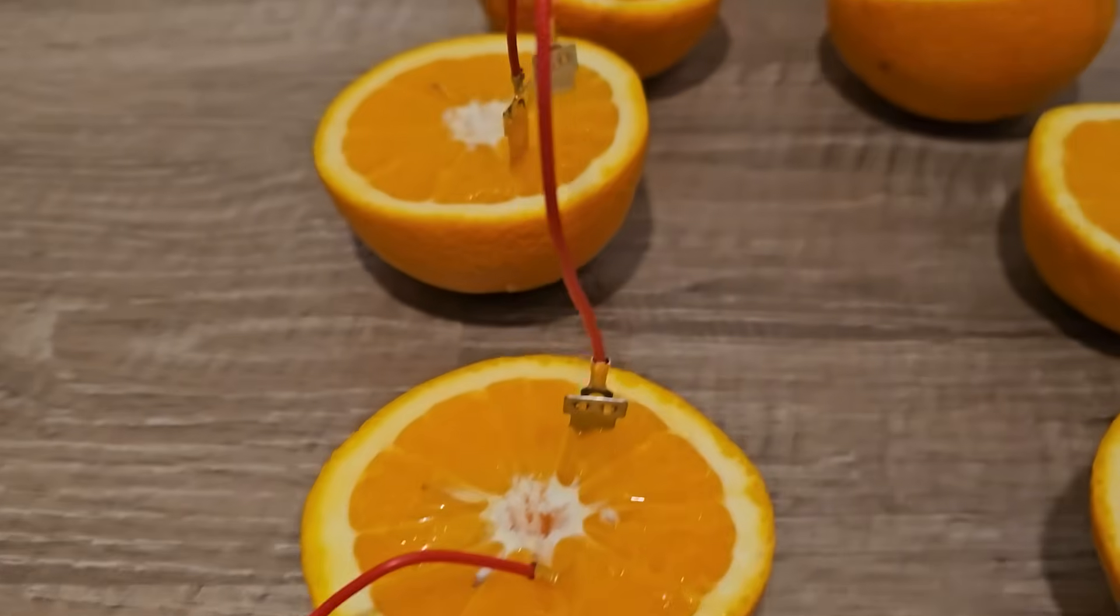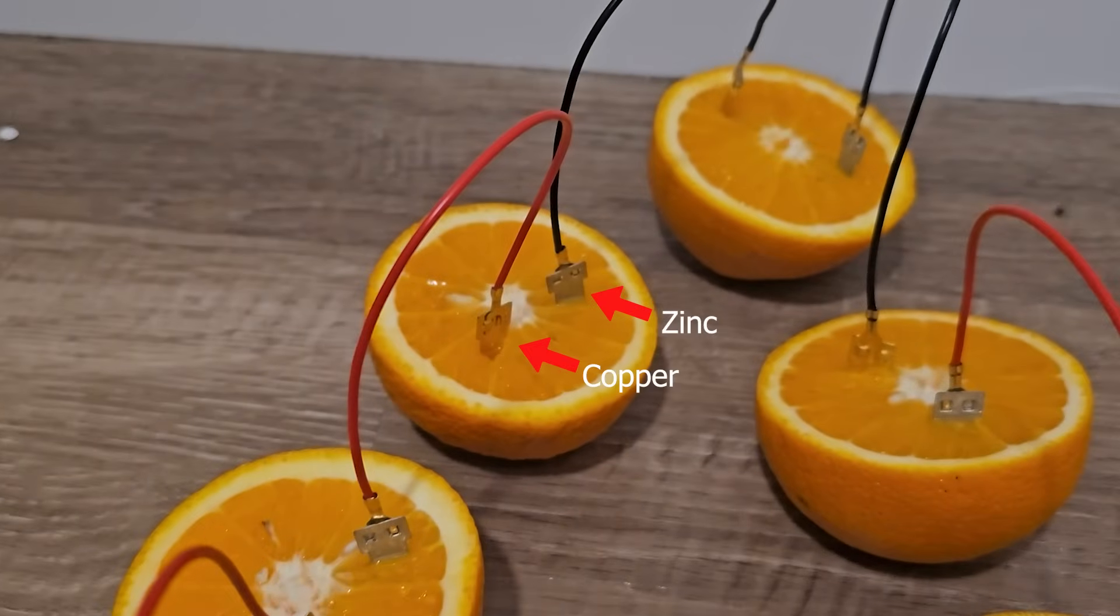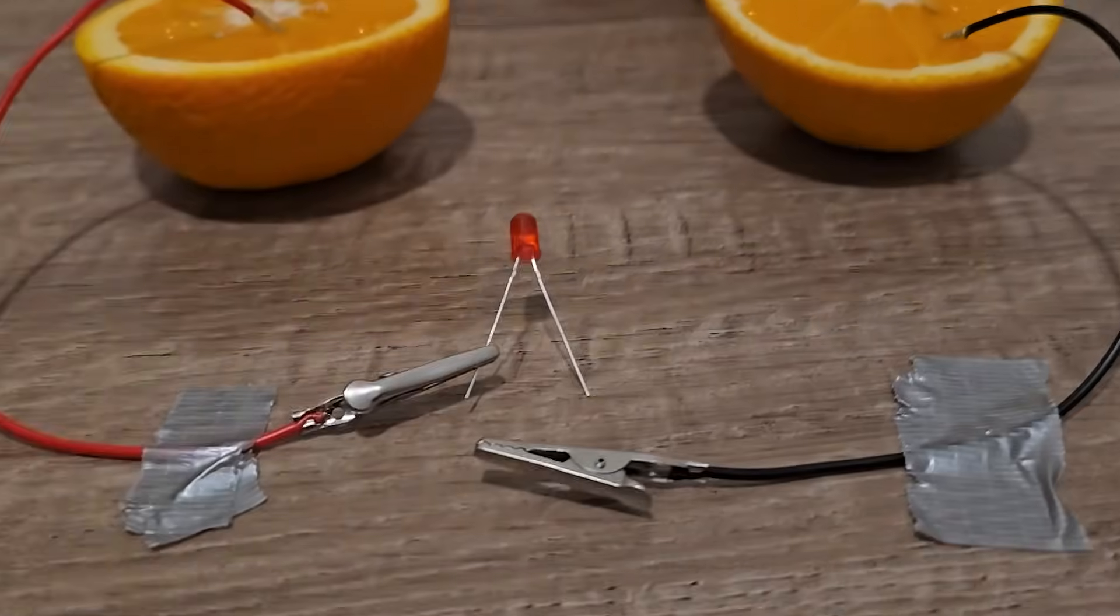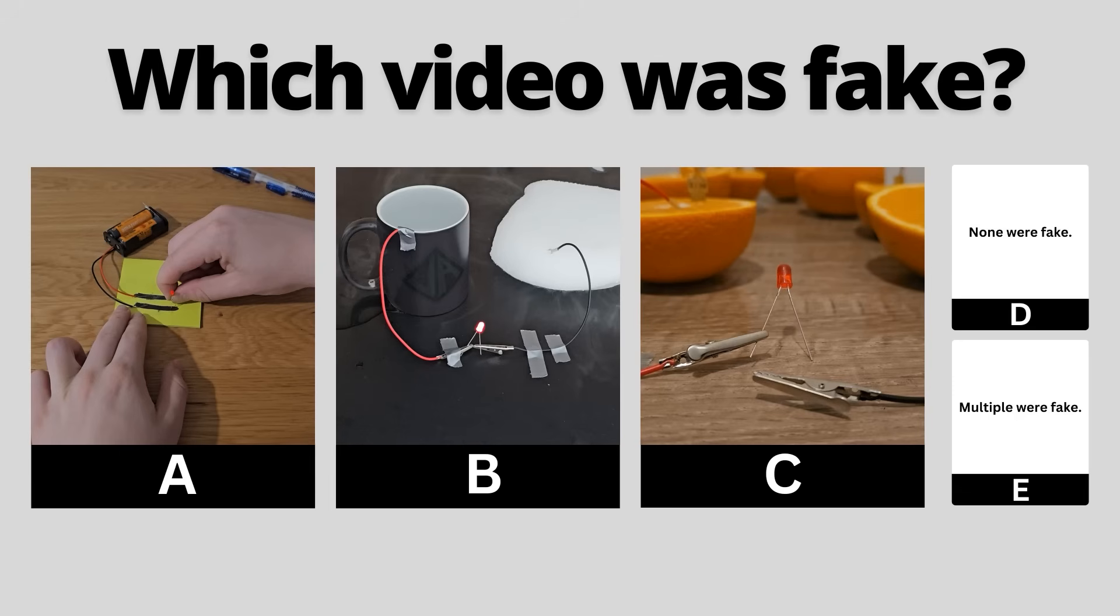Lastly grab some oranges and connect them all in series using these copper and zinc metal prongs. Then when you complete the circuit the LED will turn on. You've seen all three videos now, pause to vote in the comments which one you thought was fake.